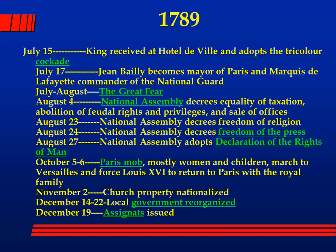The king accepts the tricolor cockade; Jean Bailly becomes the mayor of Paris; the Marquis de Lafayette is put in charge of the National Guard. There's the Great Fear in the countryside — panic, some people asking the British to come in and take over, others looting and burning noble property. On August the 4th, the National Assembly decrees equality of taxation, abolishes feudal rights and privileges, and ends the buying of offices. On the 23rd: freedom of religion; 24th: freedom of the press; 27th: the Declaration of the Rights of Man. The women were mad because they thought it should include women — eventually their leader Olympe de Gouges produced a Declaration of the Rights of Woman.